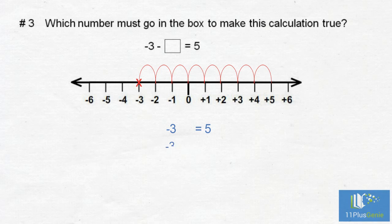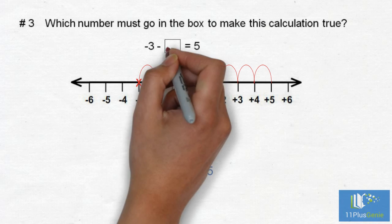Moving to the right means add. We must add 8 to negative 3 to get to 5. But there is already a minus in front of the box, so we must put a negative 8 in the box, because a negative and a negative together gives us a plus. The number that must go into the box is negative 8.